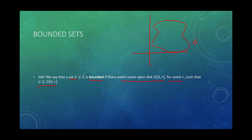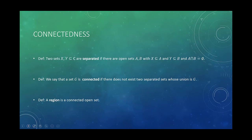We say a set is bounded if there exists some open disk that contains it. Open disks are bounded by construction. So set G is bounded if there exists some open disk such that G is contained within it. For our set G up here, we could create an open disk with radius R — there are infinitely many that work — and if this circle contains G, it is a bounded set.